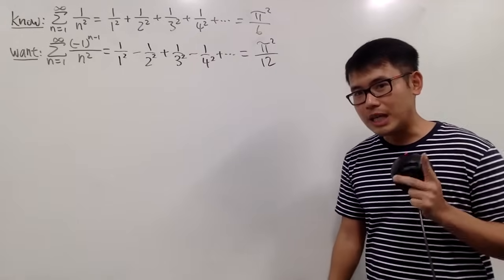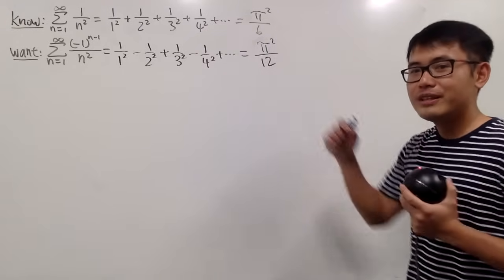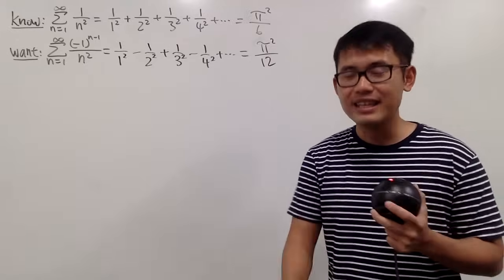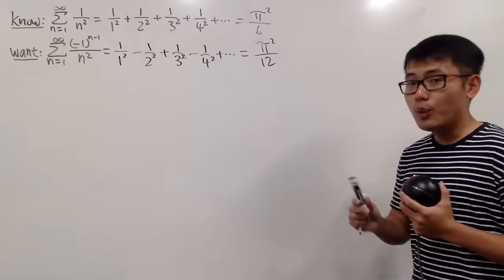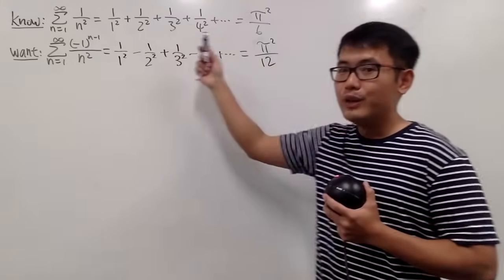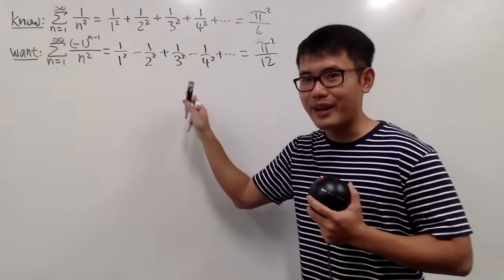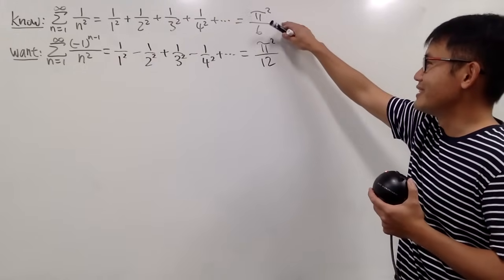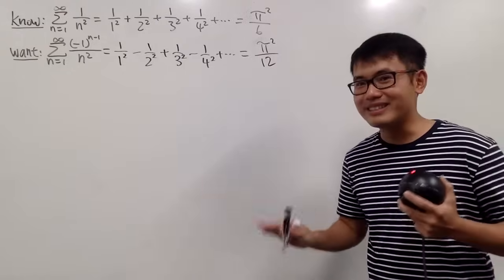First of all, if you want to see how we come up with this result, you can check out the videos — I will have the links in the description for you guys. Second of all, it's not always true that whenever you have a finite sum of a series, you can just divide it by 2 and get the sum of its alternating version. It's not always true. Even though in this case it seems that we just divide by 2, that's not the case all the time.